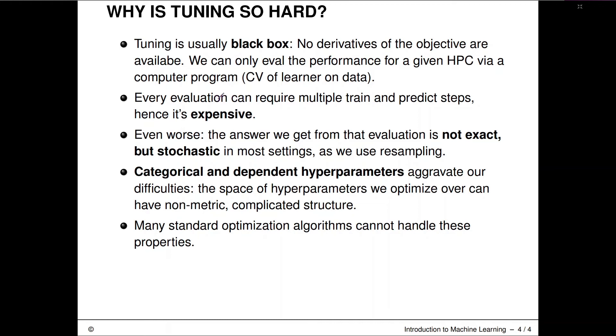Another property that's connected with that is that every evaluation is probably quite expensive. So it requires potentially multiple training and predict steps. If it's a cross-validation or at least one training and one predict step, if it's just a simple holdout evaluation procedure. And training that model on medium to large data sets can actually take some time. And so usually this C function is somewhat expensive to evaluate. We would call that an expensive black box optimization problem. And this expensiveness has one pretty direct consequence. And that is that we cannot really assume that we can perform hundreds, a hundred thousand or a few million evaluations of that function.